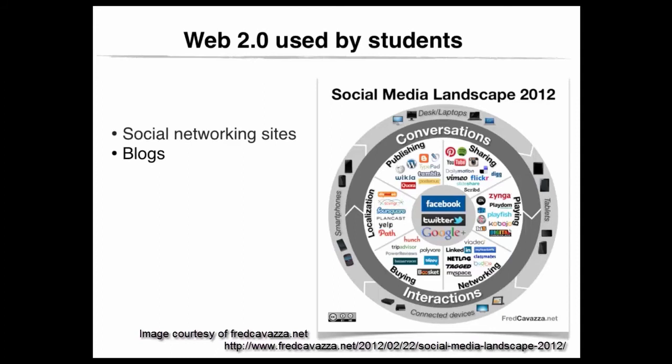A wiki is a great collaboration tool. It is a website that allows a mass of users to collaborate in creating its content. A wiki can be private, closed, or open to the public. Wiki users and visitors can add, edit, or even delete content from a wiki page.